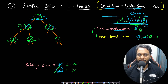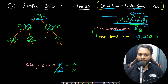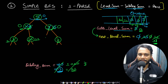Moving to the right-hand node, we pop the value 13 and subtract the sibling sum from current level sum: 13 minus 13 equals 0. Checking children: no left child, but right child with value 7 exists, so sibling sum becomes 7. This adds 7 to next level sum, making it 18. We replace the right child's value with 7 and push it into the queue.